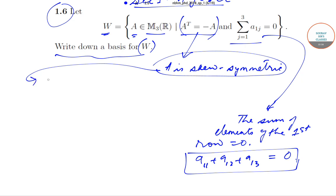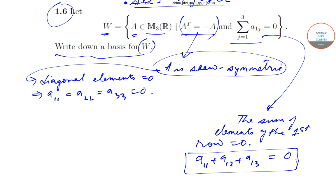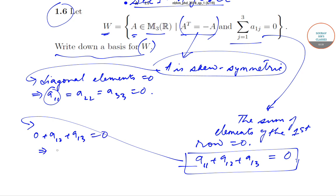Since the diagonal elements are 0, we have a_{11} = a_{22} = a_{33} = 0. Substituting a_{11} = 0 into the row sum condition gives us 0 + a_{12} + a_{13} = 0, which gives us that a_{13} is equal to minus a_{12}. This is our first condition.